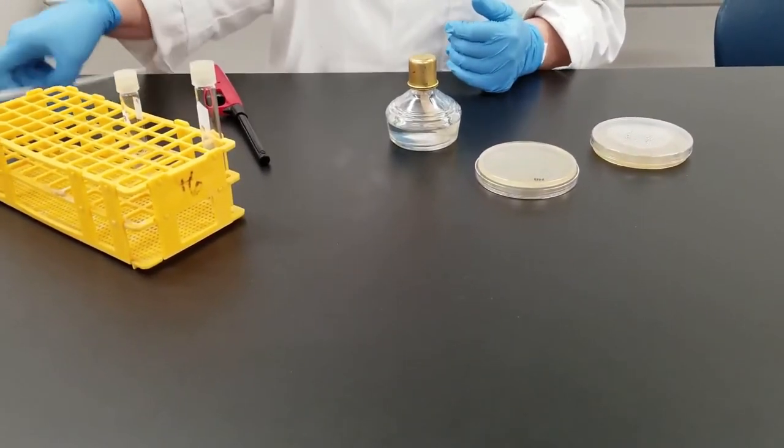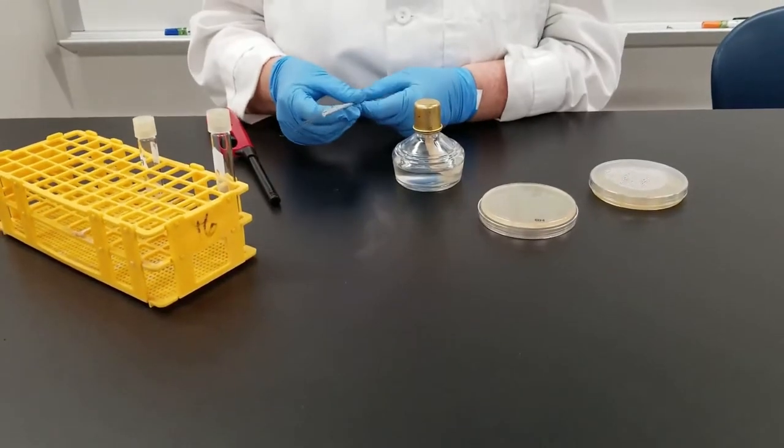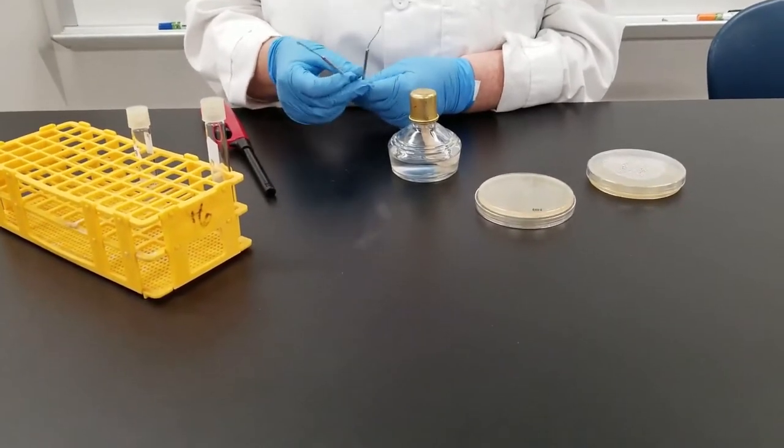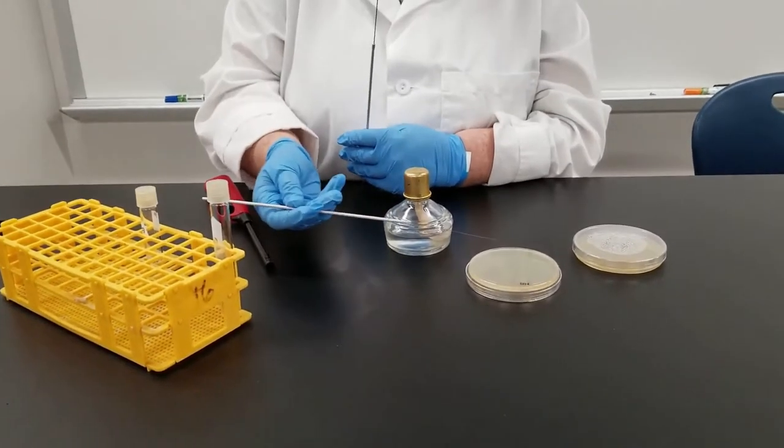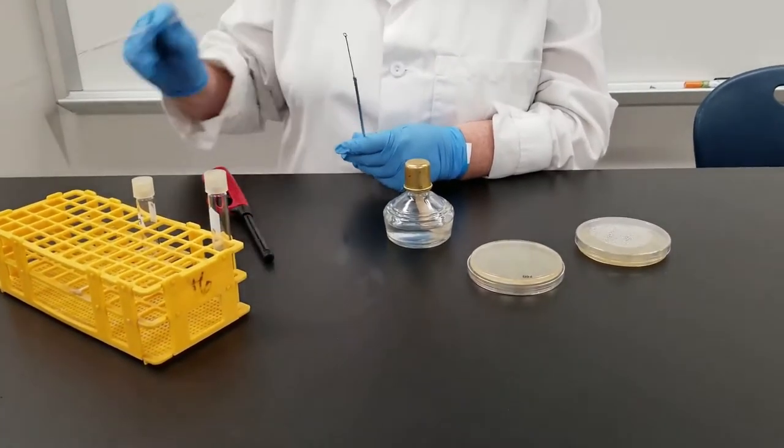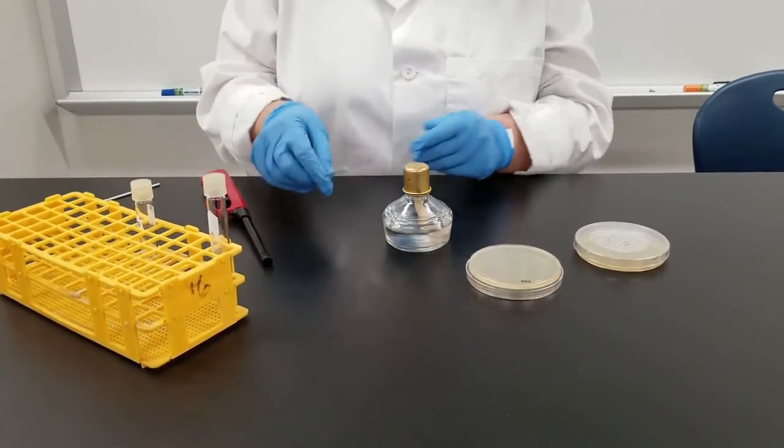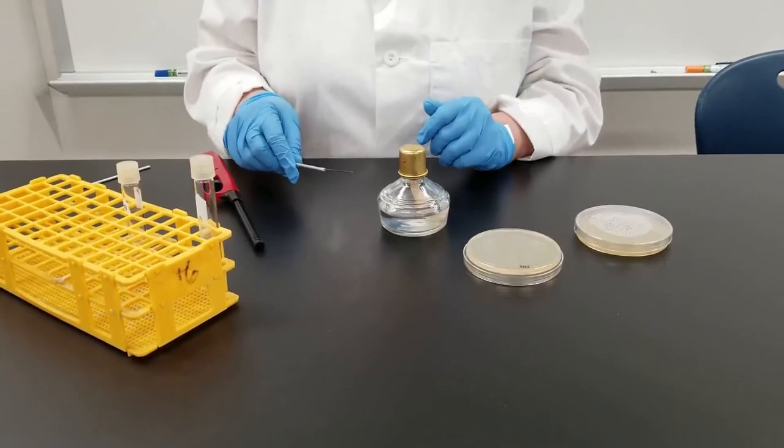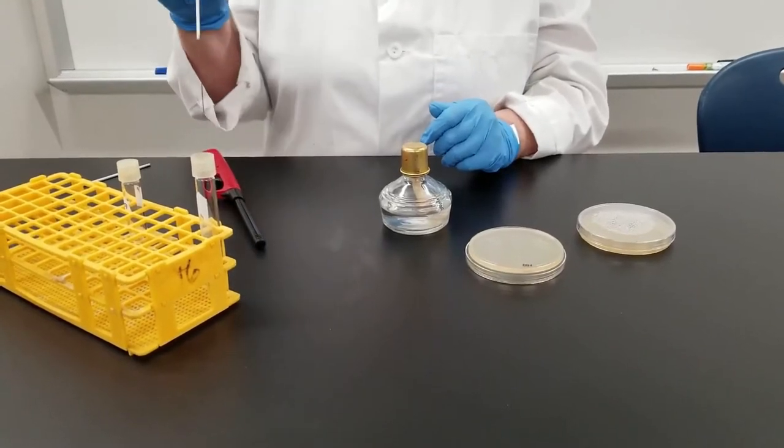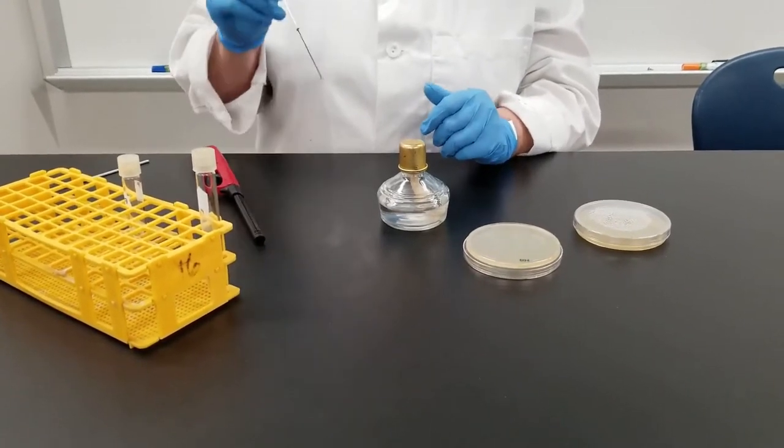Now we also have what we call our inoculating loops and needles. An inoculating needle is just a straight piece here. We don't use that quite as often. The thing we use most often will be the inoculating loop. As you can tell, it has literally a loop at the end. And we'll use this to touch the bacteria in one medium and transfer it to another.